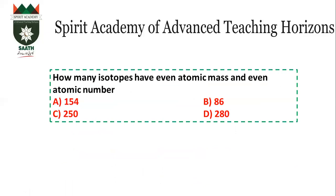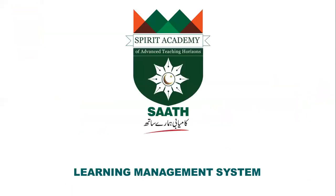How many isotopes have even atomic mass and even atomic number? From the isotopes topic, there are 280 total stable isotopes. Of these, 154 have both even atomic number and even atomic mass. So the answer is A. If you have any problems, you can message or call us. Thank you very much.